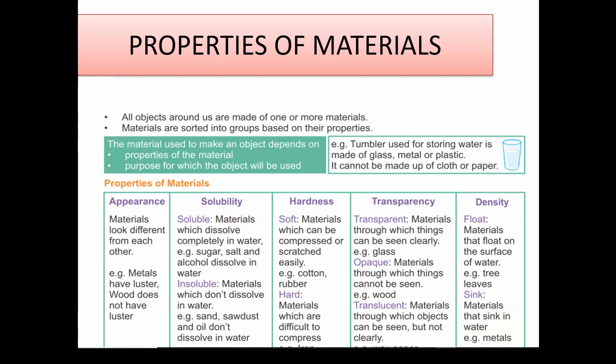For example, if I need to hold water, I cannot use cloth or paper. Why? Because the water will seep through it. So if I have to prepare a tumbler, I have to use a material that could be glass, metal, or plastic — any material which is non-porous.